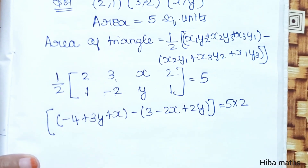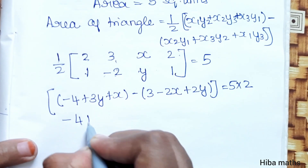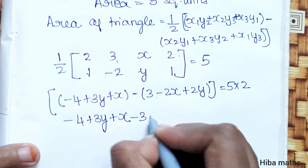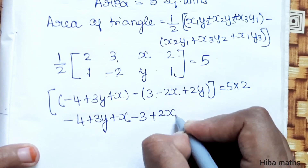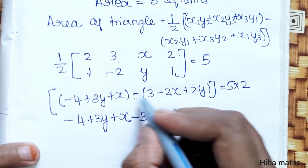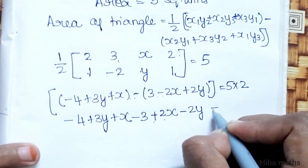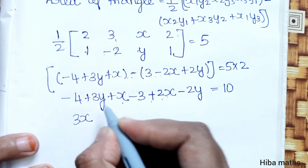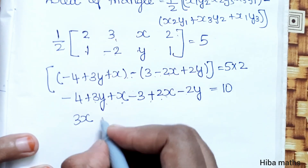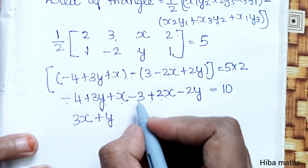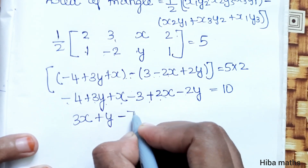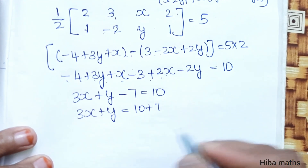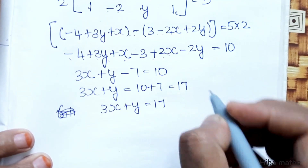Setting this equal to 5 times 2, and solving: minus 4 plus 3y plus x, then minus 3, plus 2 into x, plus 2 into y equals 10. Combining: x plus 2x gives 3x, and 3y minus 2y gives plus y, then minus 4 minus 3 gives minus 7, so 3x plus y minus 7 equals 10, therefore 3x plus y equals 17.